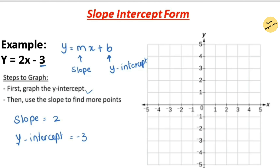The first step is to place a dot on the y-axis at negative 3, the y-intercept. Next, we apply the slope as rise over run — that is, change in y over change in x. The slope is 2, which we write as 2 over 1, meaning we move 2 points upward and 1 point to the right.